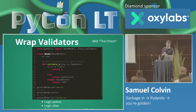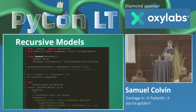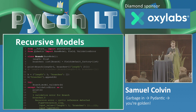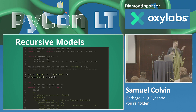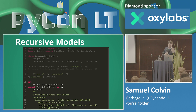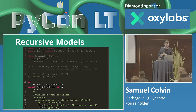Recursive models: I talked about this before. In Pydantic V1, we didn't have cycle detection, so we'd eventually raise a RecursionError if you passed cyclic data. Now we have specific cycle detection and can return a nice validation error saying where the problem was — and we detect recursion immediately rather than doing loads of validation, hitting the recursion limit, and then blowing up.